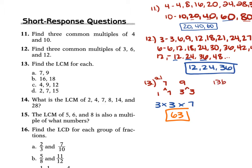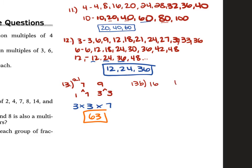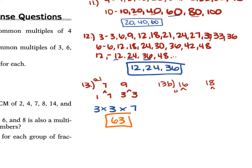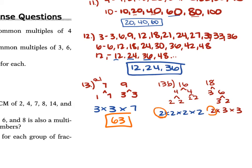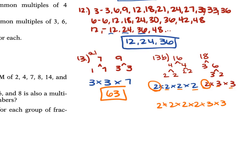For B, we have 16 and 18. The prime factorization of 16 is 2 times 2 times 2 times 2. For 18, that's 2 times 3 times 3. The common factor is one 2, so we take the remaining factors: 2 times 2 times 2 times 3 times 3. That gives us 2 times 2 is 4, times 2 is 8, times 2 is 16, times 9 gives us 144.